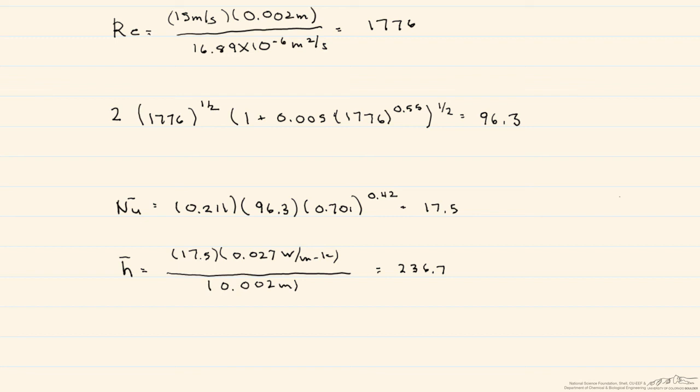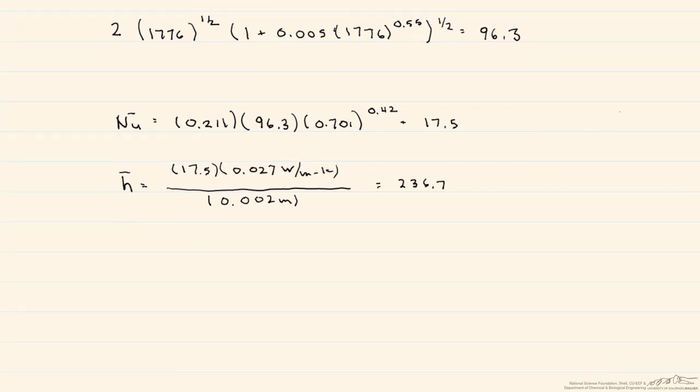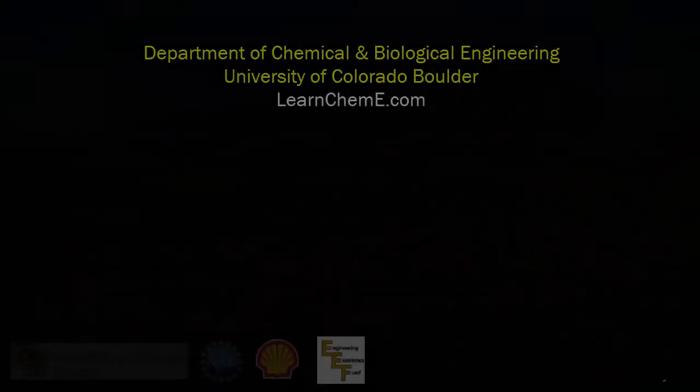Now finally, we can calculate the surface temperature, and we end up with about 64 degrees C. This setup should work to keep that transistor at a surface temperature of less than 65 degrees C. One thing to keep in mind: we have assumed that heat dissipation only comes from the surface and not from around the sides, so this would actually be considered on the higher end of the surface temperature.